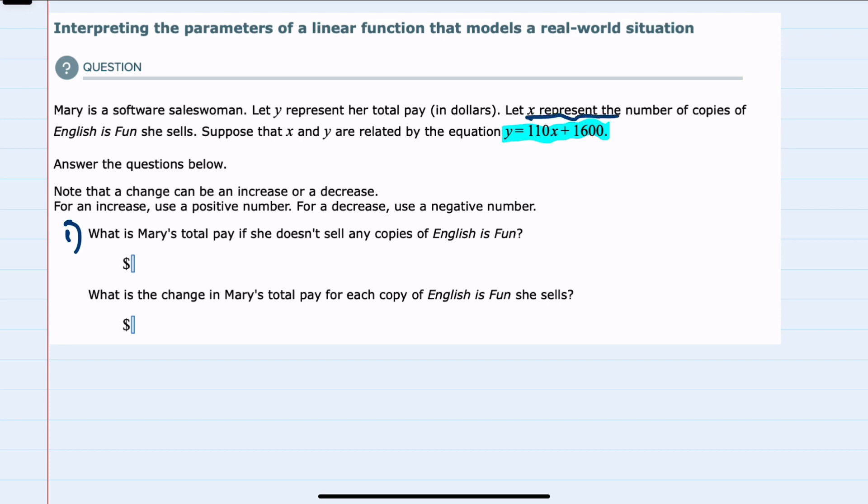And since x represents the number of copies she sells, we would replace x with 0. So here, y equals 110 times 0 plus 1600. And we get y equals 1600, which was the y-intercept since it's in slope-intercept form. So if Mary doesn't sell any copies, she would make $1,600.